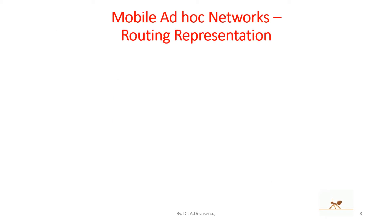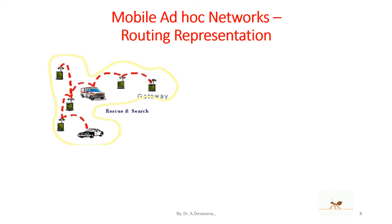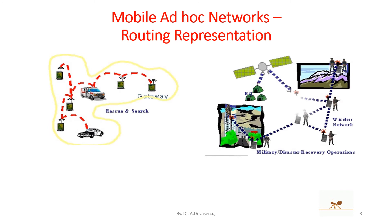Here is the mobile ad hoc network routing representation. The ad hoc network is in a moving condition. The path taken by the packet from the source to the destination is indicated here. The information from the source side has to reach the destination — the way in which it reaches the destination is known as routing. That is, with the help of routing, information from the source reaches the destination.